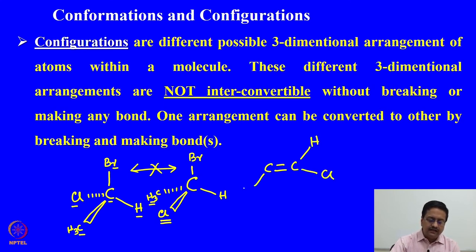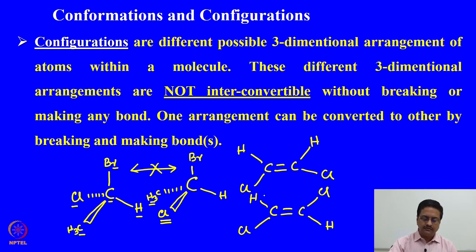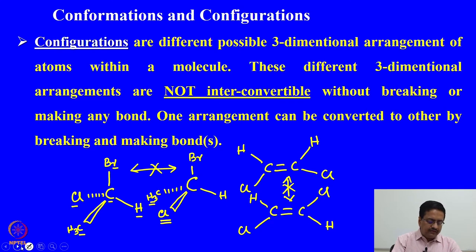Another example of configuration can be seen in geometrical isomers — cis and trans isomers. In the trans compound, the two chlorine atoms are on opposite sides of the double bond, with the two hydrogens also opposite. These two different orientations are two different configurations of the same molecule, but they are not interconvertible without breaking or making a bond. Whereas conformations are interconvertible without making or breaking a bond.